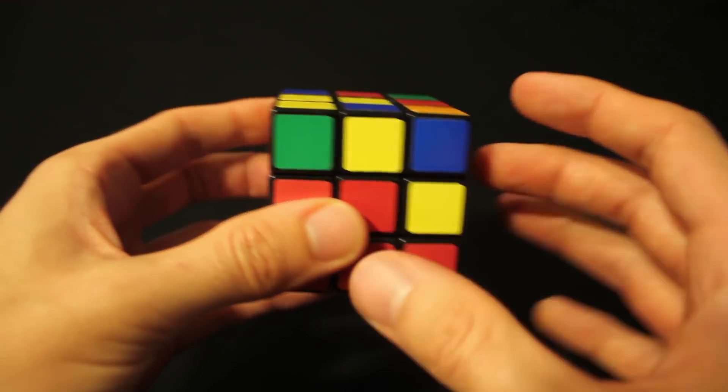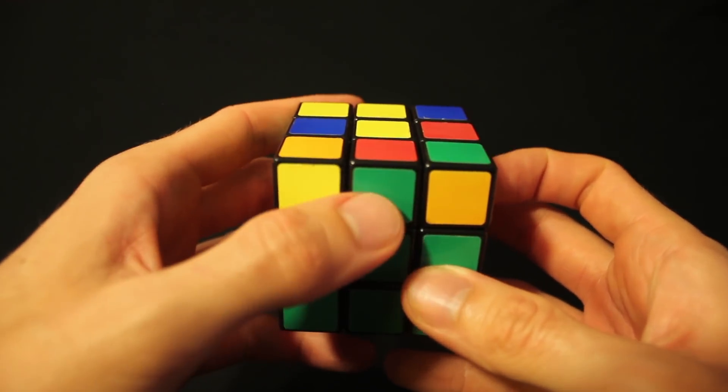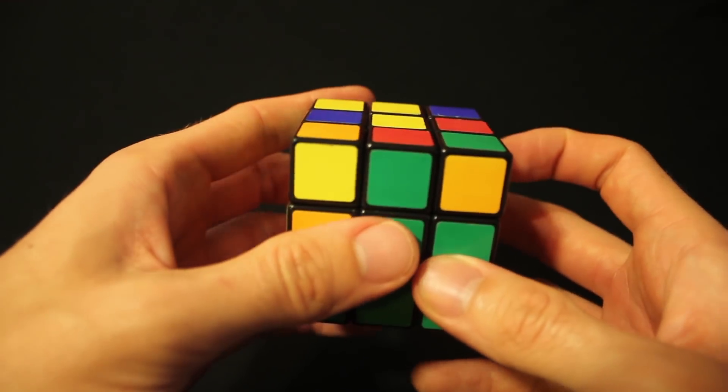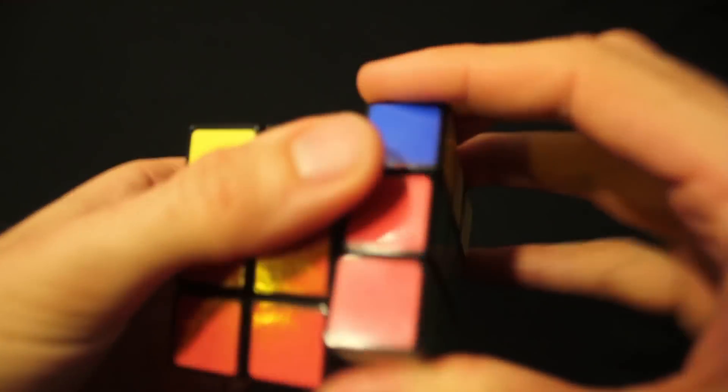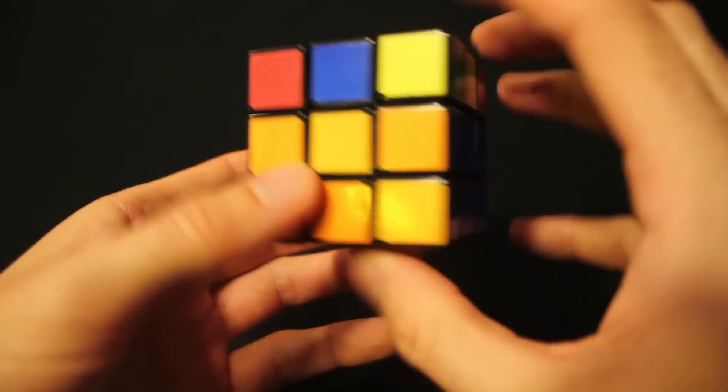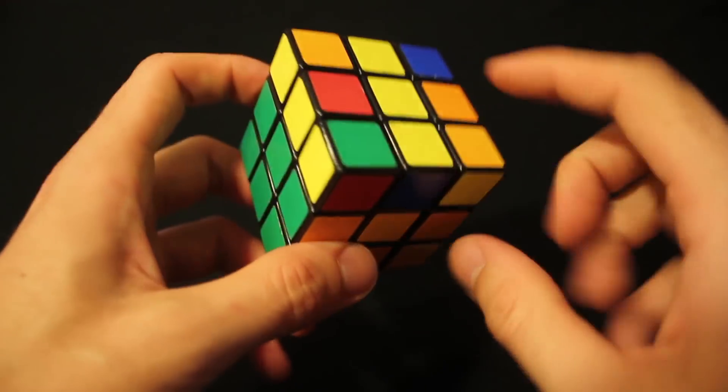So we need to take it and put it into the right place. So whether you want to do the right side to get that piece out or the left side, it doesn't matter, as long as when it is out you align it properly and then do the correct algorithm to get it into its place. And there you go, that solves the center layer.